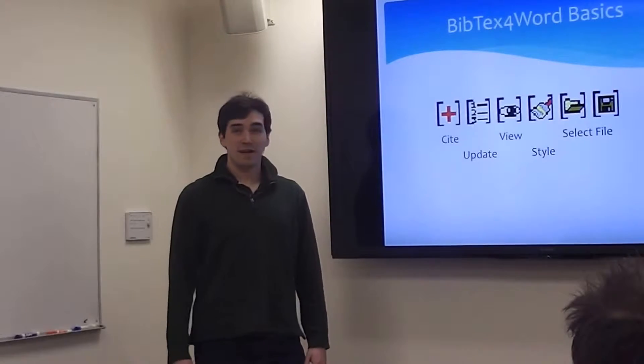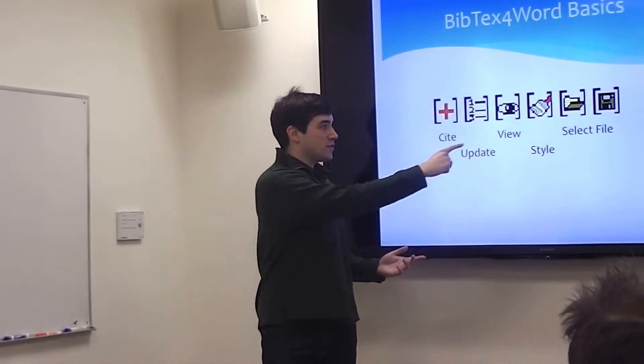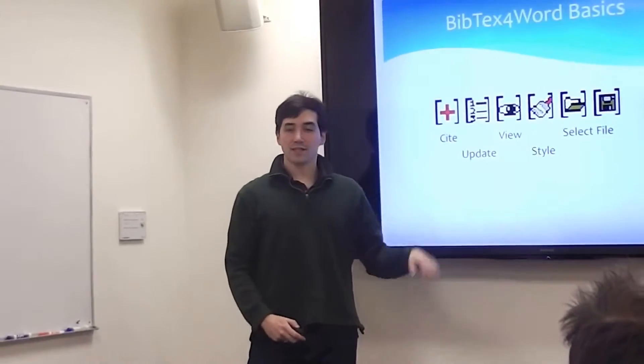The basics for BibTeX for Word is a panel that you add into Word itself that has several different options. The main one we're going to be using is just Cite. The others you don't need to access quite as much.